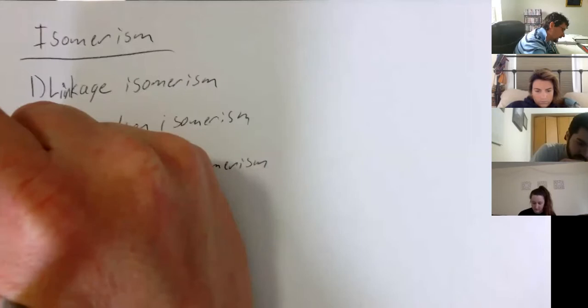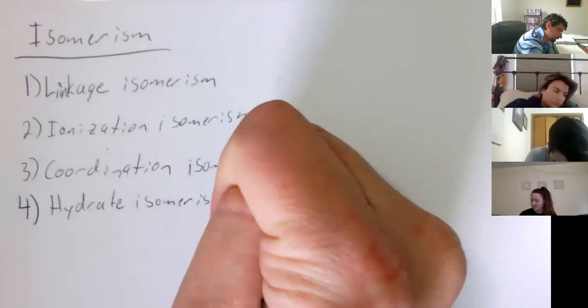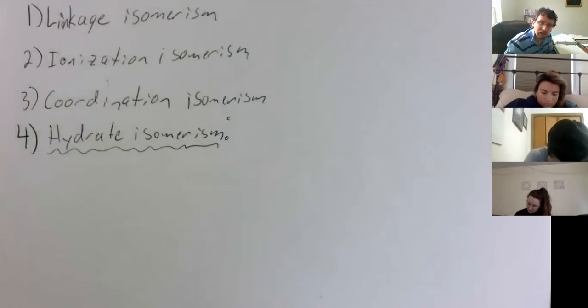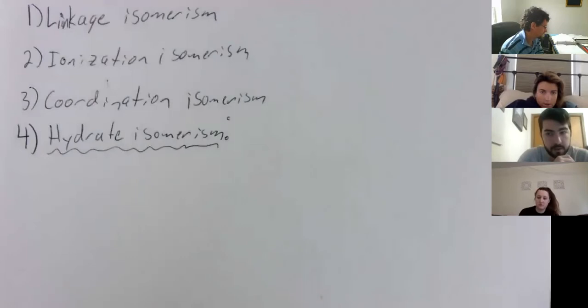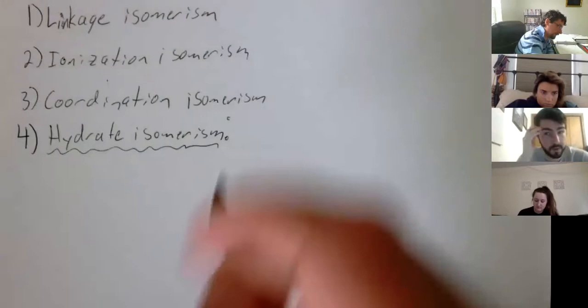The next type we're going to discuss is hydrate isomerism. We've talked about hydrates a little bit before. Can anyone describe what a hydrate is? It's kind of the idea that there's water interlocked with the molecule — the water is stuck in a lattice. Yeah, copper sulfate hydrate is a common example.